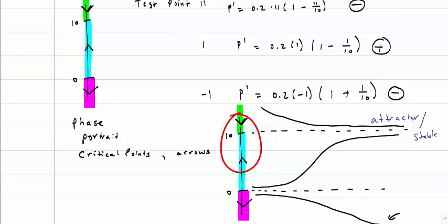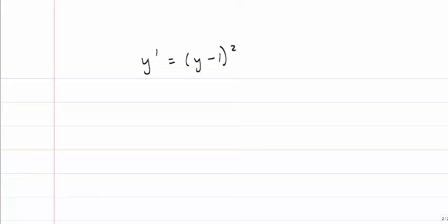If I have two arrows going towards a critical point, like I do at 10, that's called an attractor. It's also called a stable critical point. If I have, however, two arrows going away from a point, like I do at 0, then that's called a repeller or an unstable critical point. I also could get a situation where I don't have both arrows coming in or going out of a point.